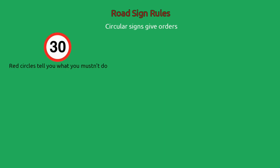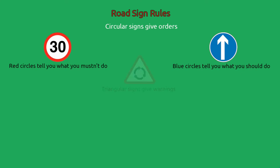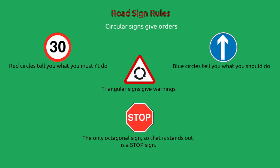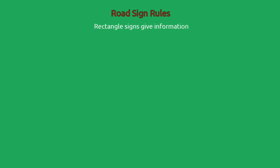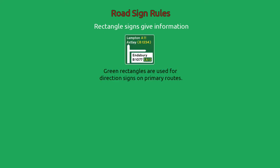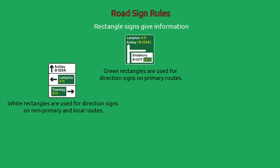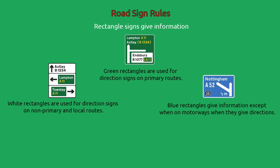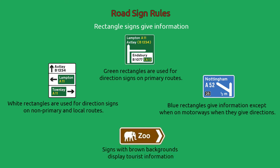Road sign rules: circular signs give orders — red circles tell you what you mustn't do, blue circles tell you what you should do. Triangular signs give warnings. The only octagonal sign, so that it stands out, is a stop sign. Rectangle signs give information — green rectangles are used for direction signs on primary routes, white rectangles for direction signs on non-primary and local routes, blue rectangles give information except on motorways where they give directions. Signs with a brown background display tourist information.